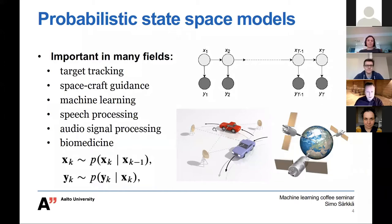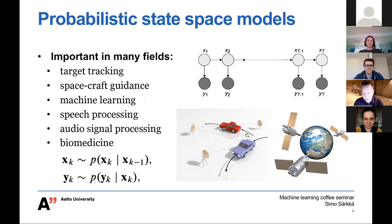A typical example is target tracking. You might have a car or aeroplane where the state contains position and velocity variables. Then you have measurement devices — radars, cameras detecting objects, or acceleration sensors. Those go into y, and x contains the state with positions, velocities, and other variables. The dynamic model is typically derived from a stochastic differential equation, or learned from data. The state x can also be a discrete value — in speech processing, this might be a syllable identifier.